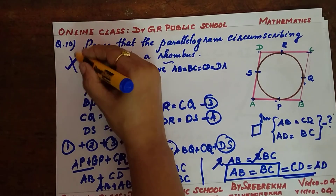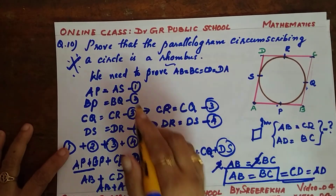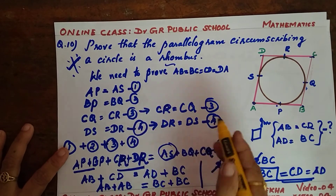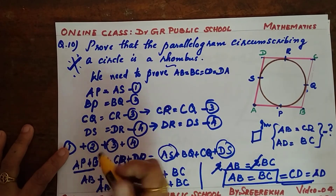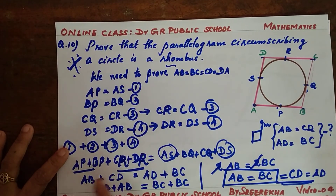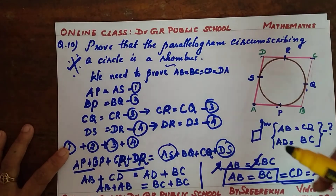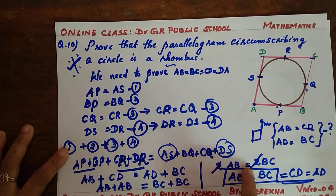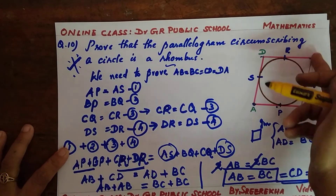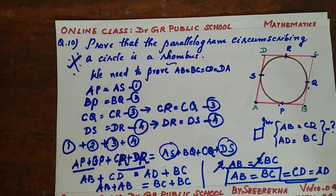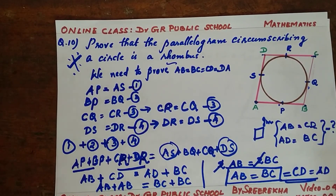This is a very important question. To summarize: find equations 1, 2, 3, 4 using Theorem 2, add them up, and arrange the terms so that AB plus CD equals AD plus BC. Then apply the parallelogram condition to get 2 times AB equals 2 times BC, giving AB equals BC. Since all four sides are equal, the parallelogram is a rhombus. I hope all of you understand this. Thank you.